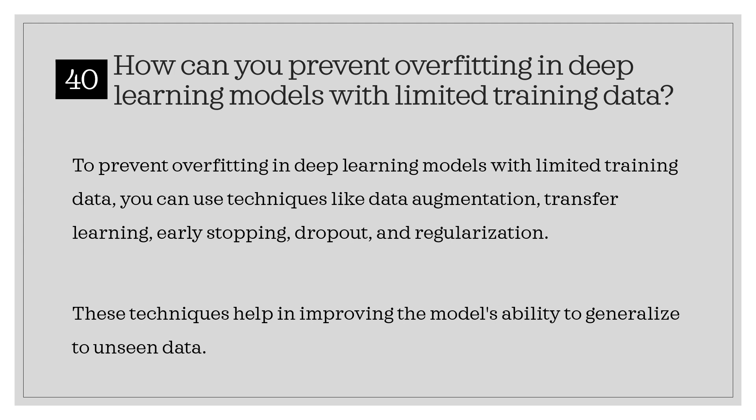How can you prevent overfitting in deep learning models with limited training data? To prevent overfitting in deep learning models with limited training data, you can use techniques like data augmentation, transfer learning, early stopping, dropout, and regularization. These techniques help in improving the model's ability to generalize to unseen data.